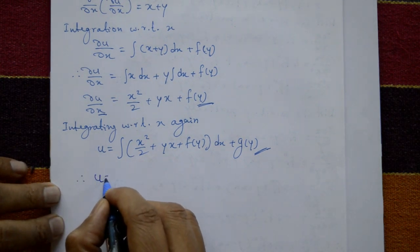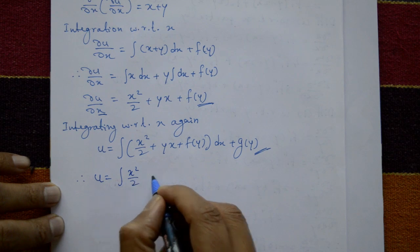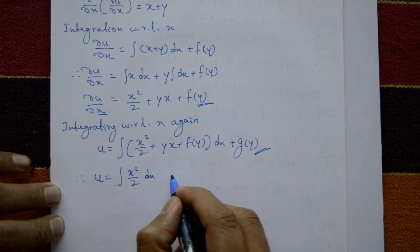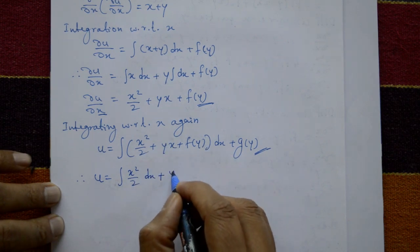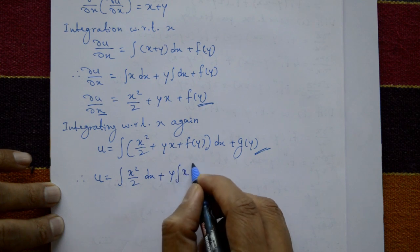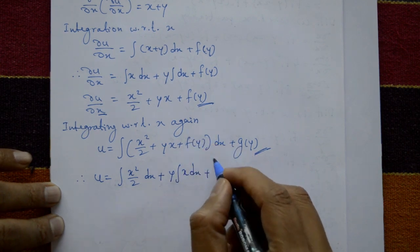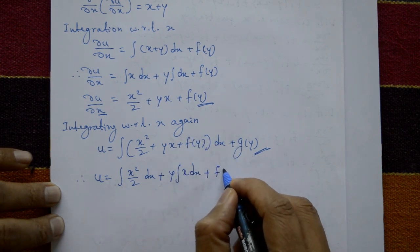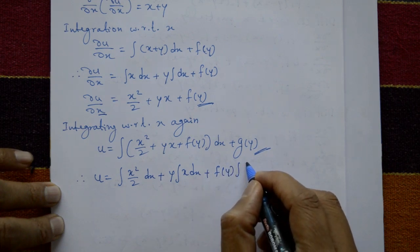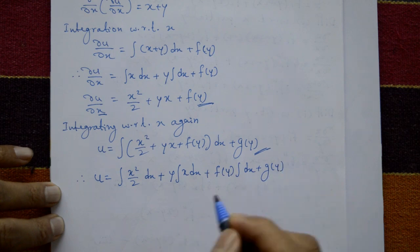Therefore u equals: integration of x²/2 dx, plus y (constant taken outside) times ∫x dx, plus f(y) (a constant taken outside the integral) times ∫dx, plus g(y).